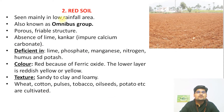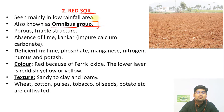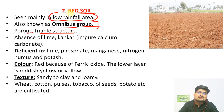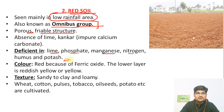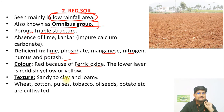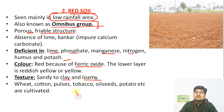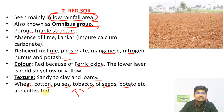Next is red soil, also called the omnibus group — a group that is a mix of various components. It has a porous and friable structure and is mainly seen in low-rainfall areas in India. It is deficient in lime, phosphate, manganese, nitrogen, humus, and potash, but contains lots of ferric oxide. Its texture is sandy to clay to loamy, and it supports cultivation of wheat, cotton, pulses, tobacco, oilseeds, and potato.